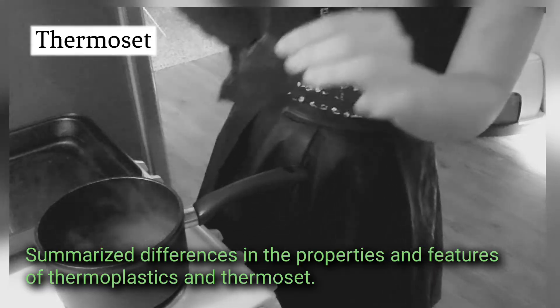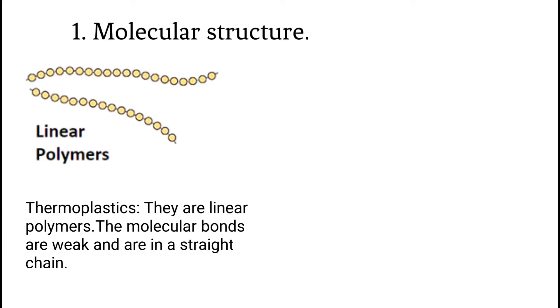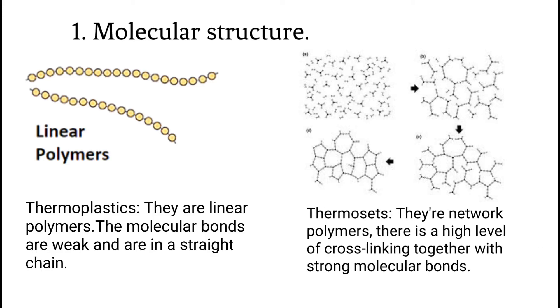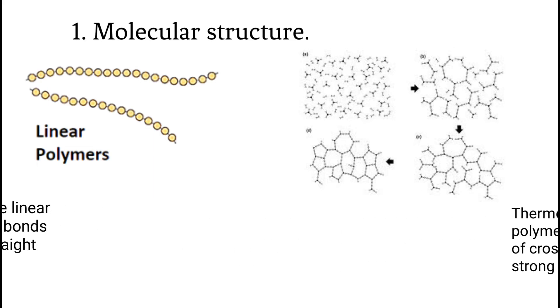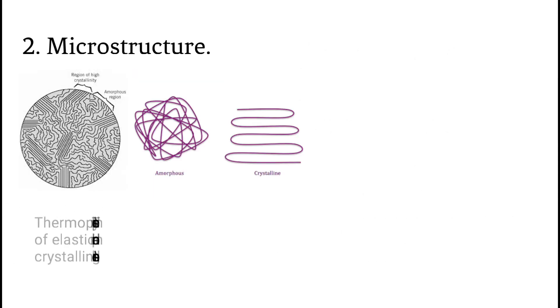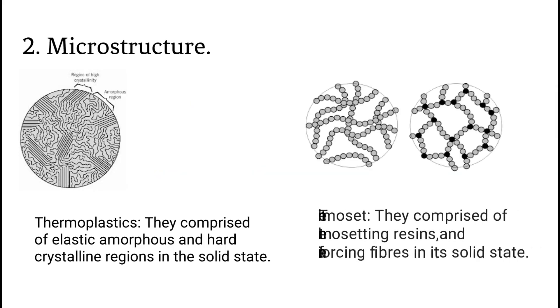Summarized differences in the properties and features of thermoplastic and thermoset: Molecular structure - thermoplastics are linear polymers with weak molecular bonds in a straight chain. Thermosets are network polymers with a high level of cross-linking together with strong molecular bonds. Microstructure - thermoplastics comprise elastic amorphous and hard crystalline regions in the solid state. Thermosets comprise thermosetting resins and reinforcing fiber in its solid state.